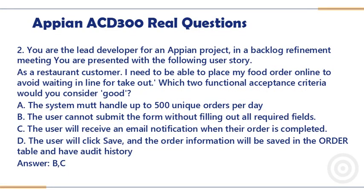Question 2. You are the lead developer for an Appian project. In a backlog refinement meeting you are presented with the following user story: As a restaurant customer, I need to be able to place my food order online to avoid waiting in line for takeout. Which two functional acceptance criteria would you consider?